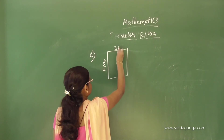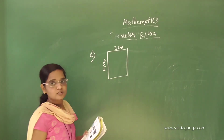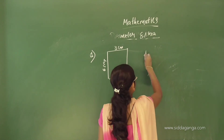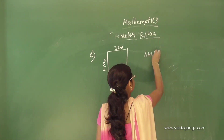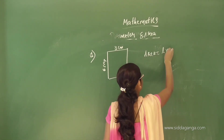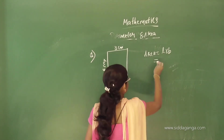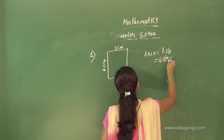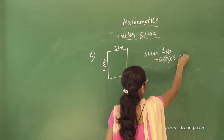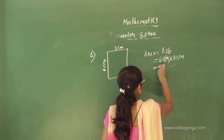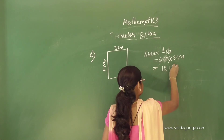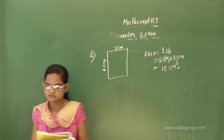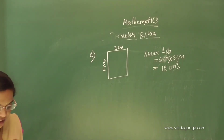Next: dimensions are 6 cm and 3 cm. Area formula: length into breadth. Area equals 6 cm into 3 cm — 6 times 3 is 18. The answer is 18 cm².